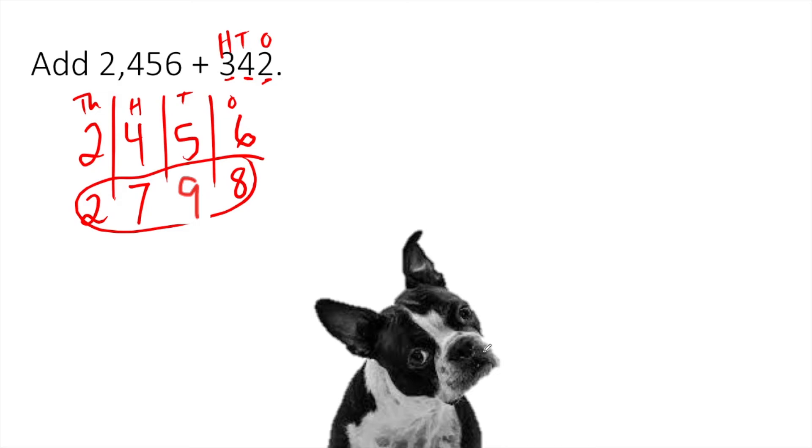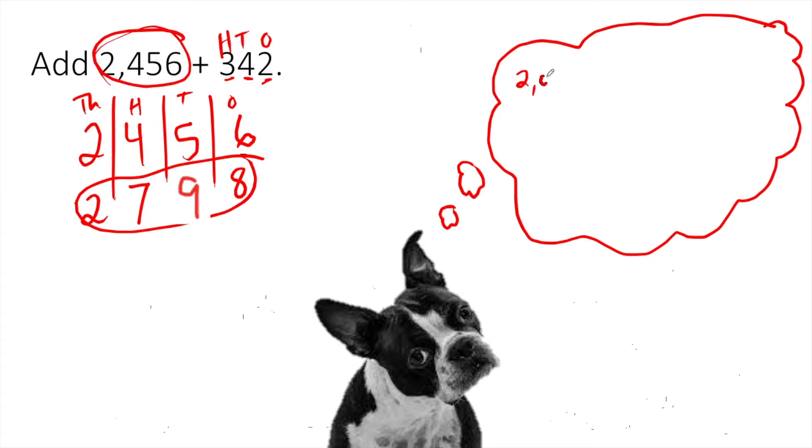Of course, you know Bruno likes us to show what we're thinking. So let's write this out in a little thought bubble. 2,456 is really 2,000 plus 400 plus 50 plus 6. And 342 is really 340 and 2. Now I'm just going to move these around a bit. I want to put this one together with this one because they're both 100s. I want to put this one together with this one because they're both 10s. And I want to put this one together with this one.